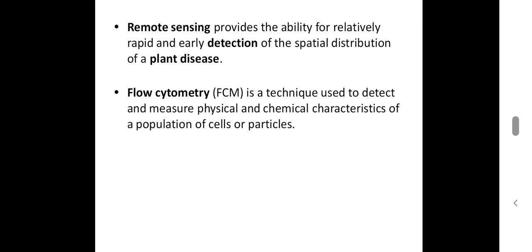Next, remote sensing: without touching any object, remote sensing is carried out. Disease detection is done by thermography using near-infrared wavelengths. Then, flow cytometry: in this method, a sample containing cells is suspended in a fluid and injected into the instrument, where detection of pathological or pathogen cells is done and the population of cells is counted.